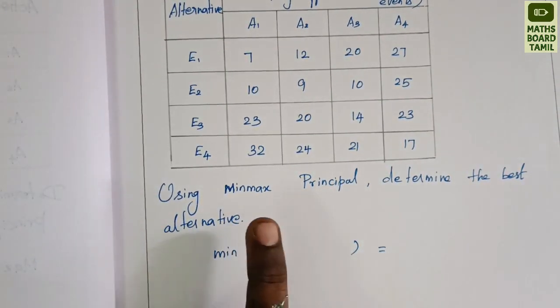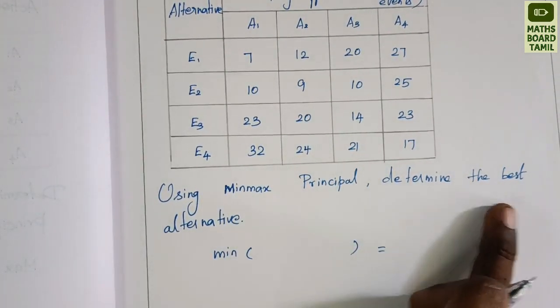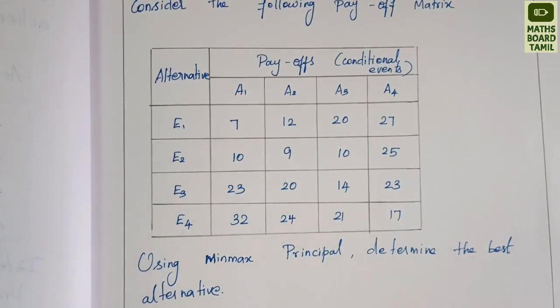When using Minimax criteria, we find the minimum of the maximums. This minimum corresponds to the best alternative.